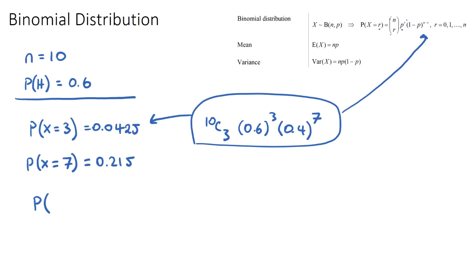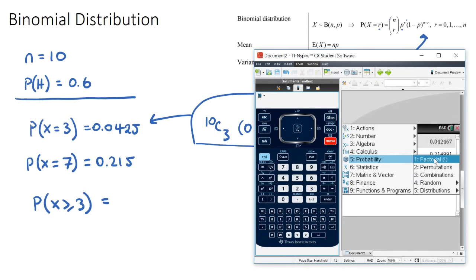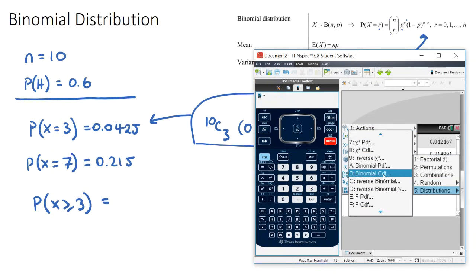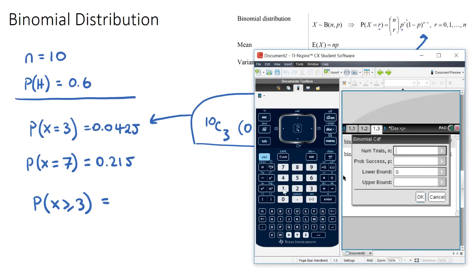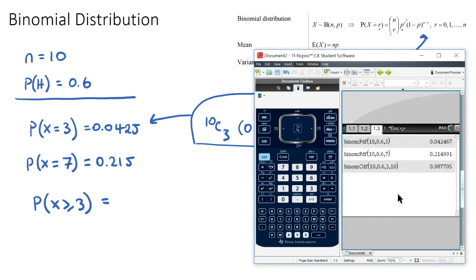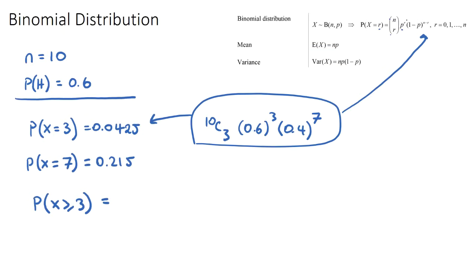If they ask for the probability of three or more heads — so X is greater than or equal to three — that means we could get three, four, five, all the way up to ten heads. When we have a range of scores we use binomial CDF. CDF has a lower bound and upper bound: number of trials is ten, probability is 0.6, lower bound is three, upper bound is ten.